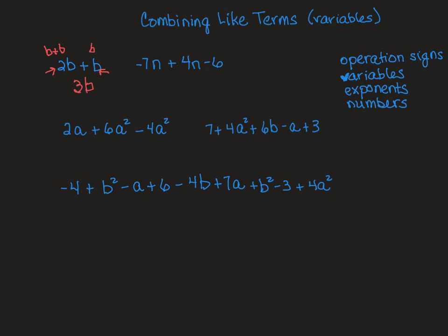So if I had two candy bars and another candy bar, I have a group of two candy bars and another candy bar. All together, I have three candy bars. I might have two separate groups, but all together there's three of them if I'm adding them together.